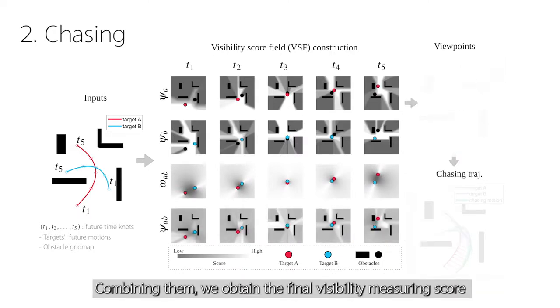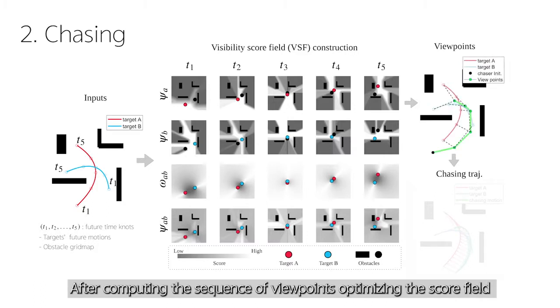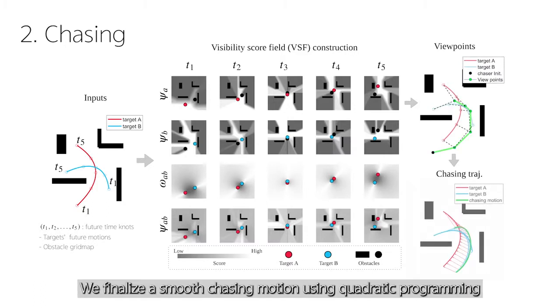Combining them, we obtain the final visibility measuring score. After computing the sequence of viewpoints optimizing the score field, we finalize a smooth chasing motion using quadratic programming.